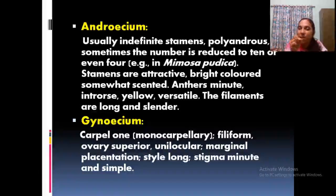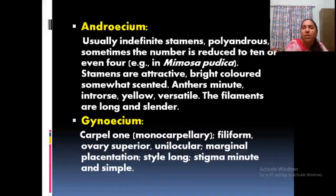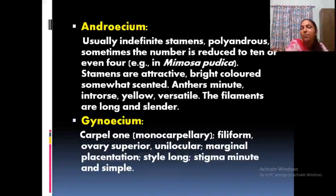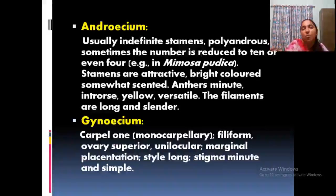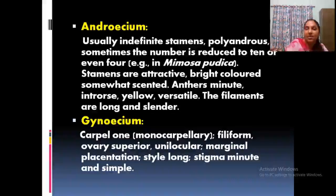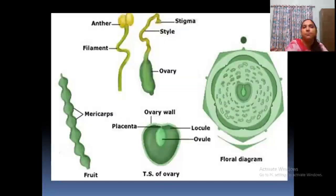When you pluck a single flower you can see the indefinite stamens, which are minute. Gynoecium is monocarpellary, with filiform style, unilocular, and marginal placentation — these are common in all three subfamilies. Stigma is minute. Remember the characteristic feature of the androecium, the leaf movement of the plant — the sleeping movement when touched — the pulvinus, the cymose head inflorescence — these are all typical features of the family Mimosaceae.